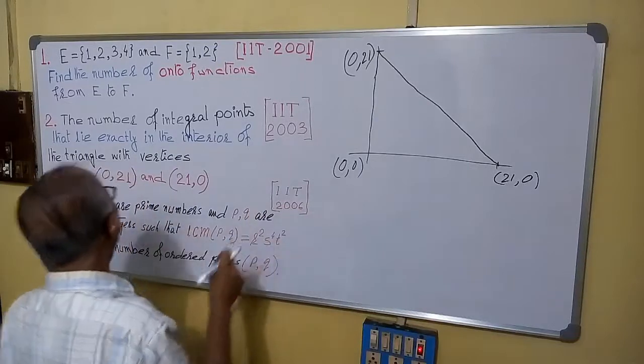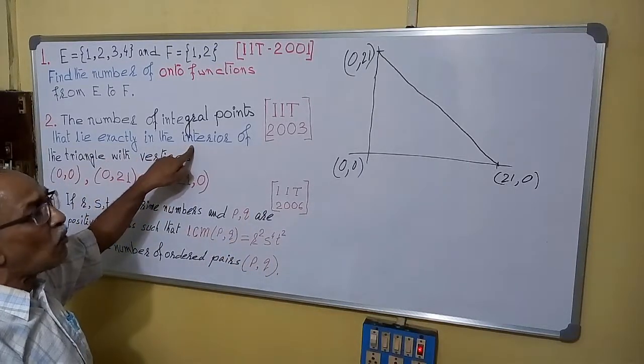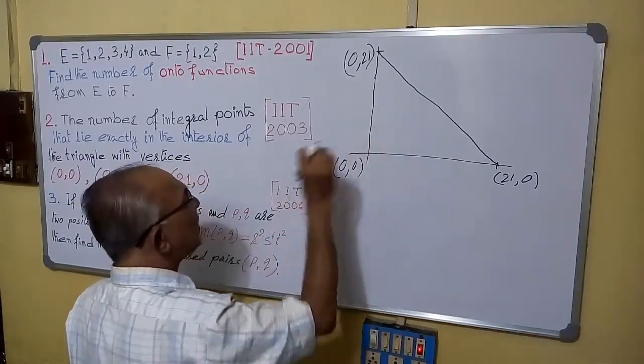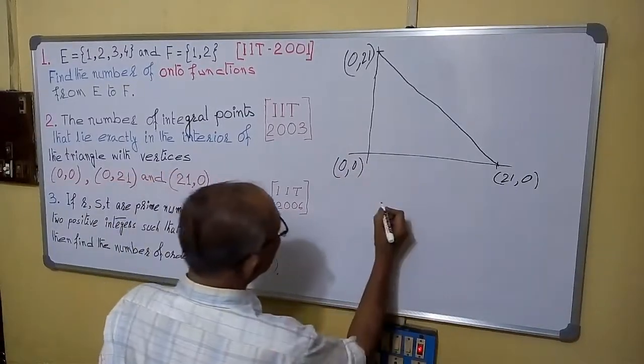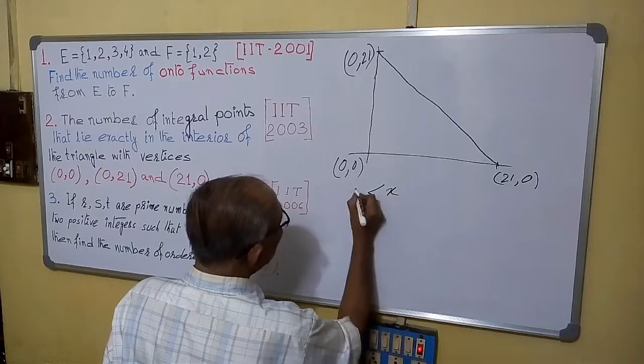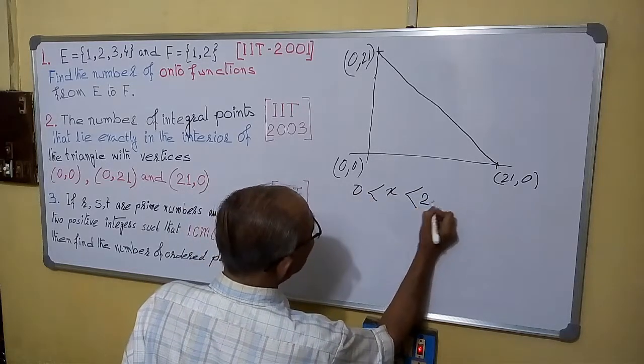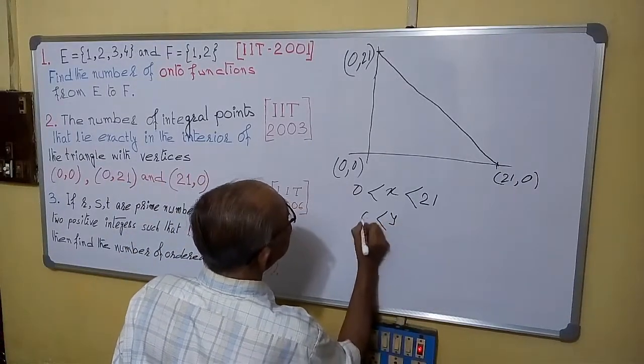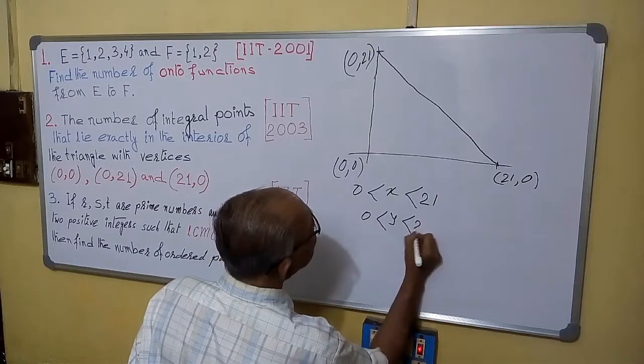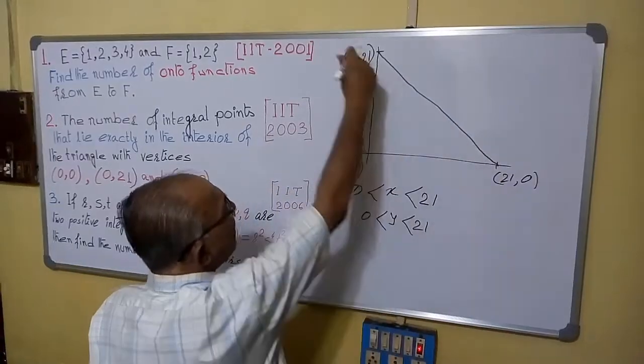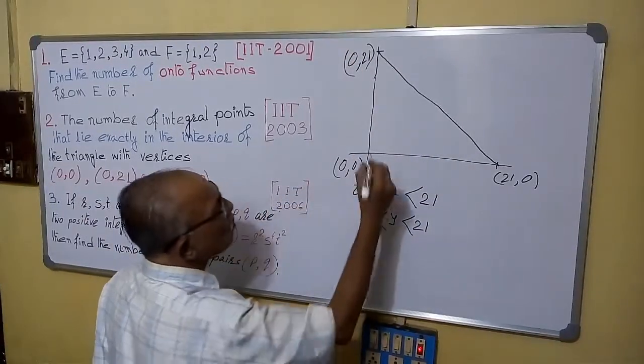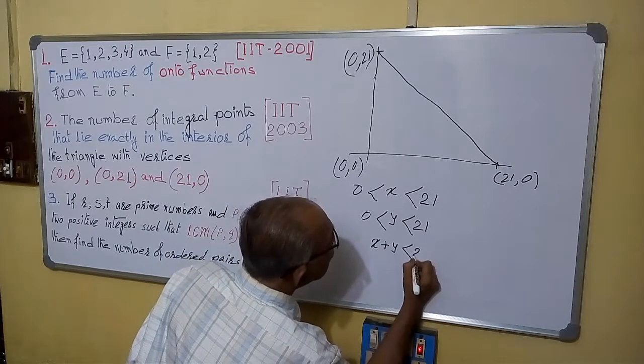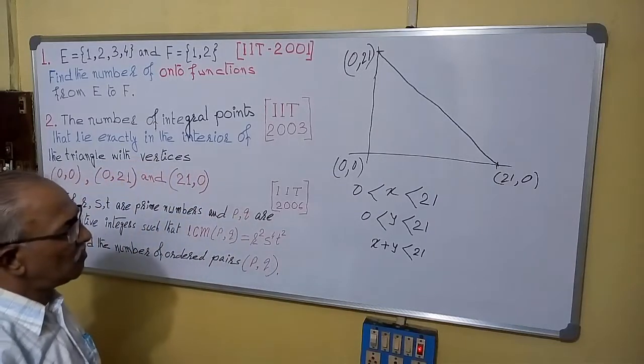It is exactly in the interior, give importance to this point. That means no point will lie on the line also, exactly in the interior. So from here, we can say, x is surely greater than 0 and less than 21. Y is similarly, it is also greater than 0 and less than 21. And you can easily understand the equation of this line is x plus y equals to 21. So here, we can say, x plus y is less than 21.